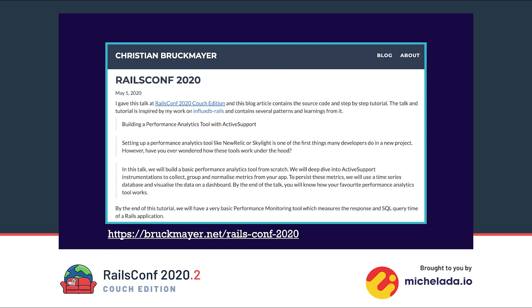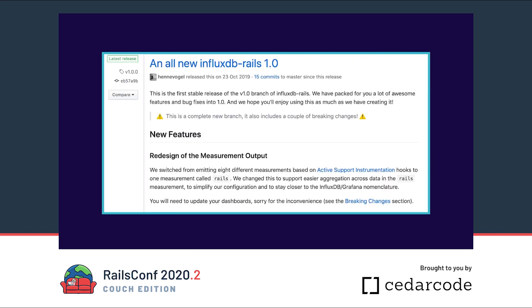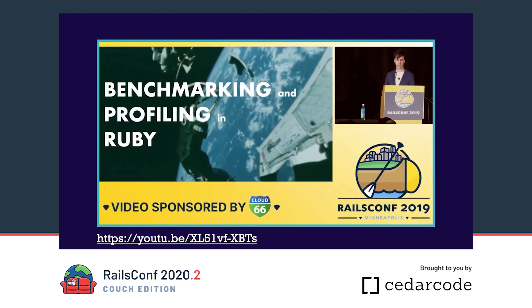Everything I present today is also published on my blog, so if something is a little bit too fast you can look it up there too. Most of the knowledge I present today is extracted from the InfluxDB Race Jam, which is an open-source performance monitoring tool I maintain with a friend. Because we only have 30 minutes, we will not discuss how to actually spot and fix performance issues. If you are interested in this topic, I recommend watching the talk from Nate Berkopec from last year's RaceConf.